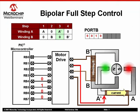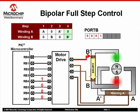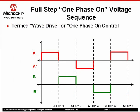Continuing through this algorithm, lead A' is next driven high, followed finally by driving lead B' high to complete the 360-degree rotation. This type of full-step algorithm is referred to as the one-phase-on voltage sequence. The term wave drive is also sometimes used, as the voltage sequence resembles a wave. Each lead is energized one at a time for each step.